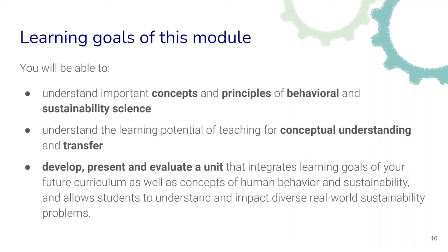The learning goals for this module — that is, what you'll be able to do by the end — are: first, to understand important concepts and principles of behavioral and sustainability science. Second, to understand the learning potential of teaching for conceptual understanding and transfer of learning of these core concepts. And lastly, to develop, present, and evaluate a unit that integrates learning goals from your future curriculum as well as concepts of human behavior and sustainability, and one that allows students to understand and impact diverse real-world sustainability problems.